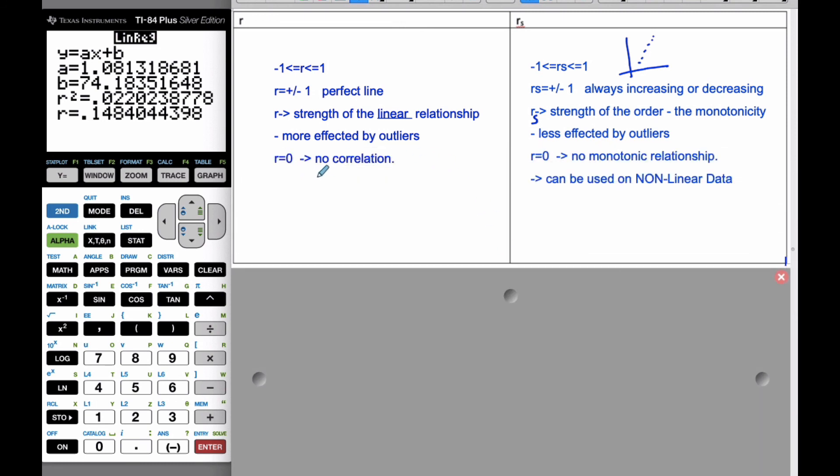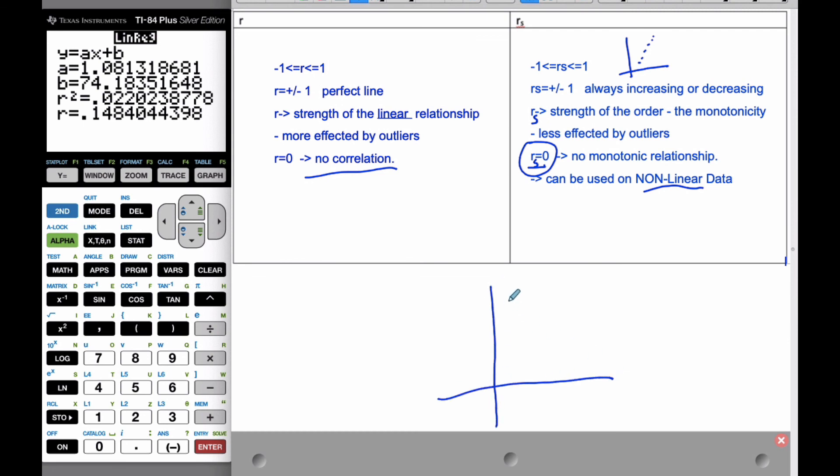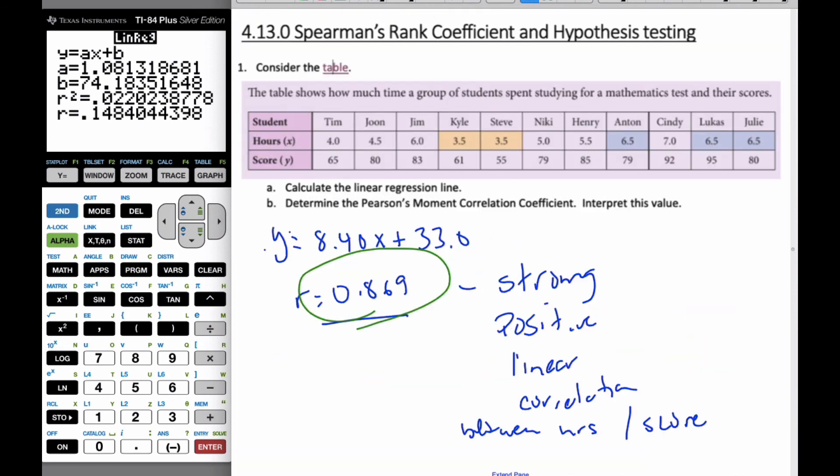If R equals 0, there's no correlation. And if R sub S equals 0, there is no monotonic relationship. One of the advantages of the Spearman's is it can be used on nonlinear data. If I had a scenario where I had a graph that was clearly going downwards, this is definitely not linear. But if I would do a rank order of this, it would be very strongly negative, close to negative 1 if not exactly equal to 1. There's your quick scenario of Spearman's rank coefficient in a comparison with Pearson's moment correlation coefficient.